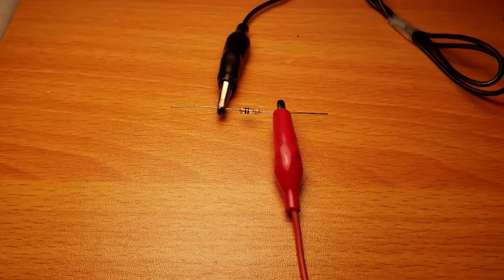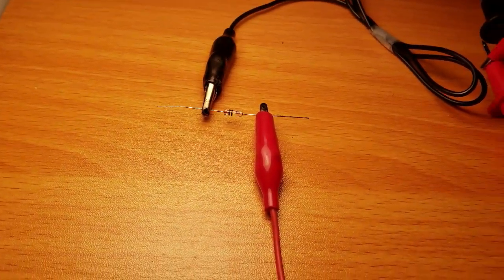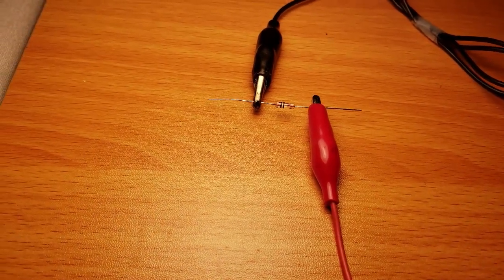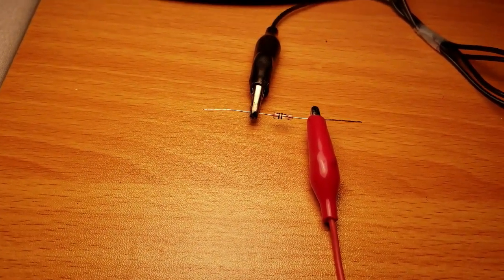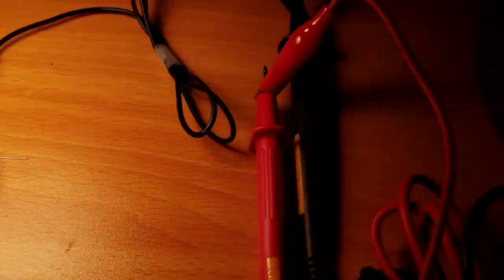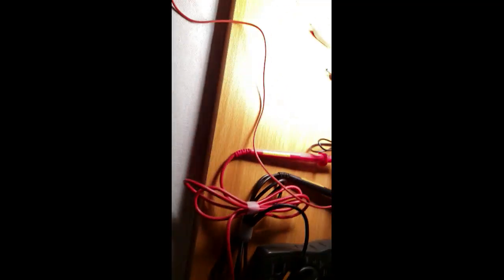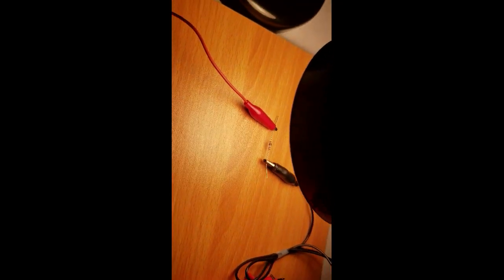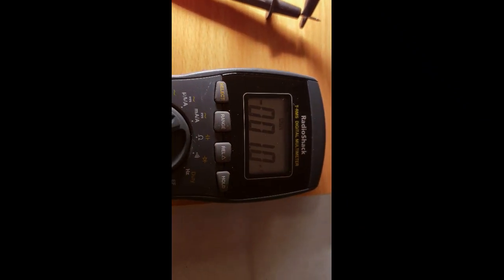Now notice that the black alligator clip is on the black spot of the zener diode. If you reverse the connection, the direction of the current will reverse. So as you can see, the connections were reversed and you can see the negative sign in the multimeter. The current is going in the other direction now.